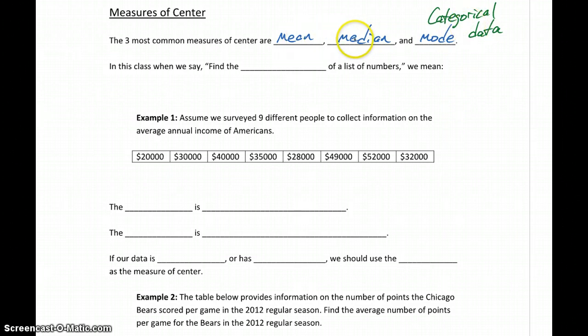So this gets us down to two common measures of center: mean and median. There are actually more than those — multiple different ways of finding the center of a data set. For instance, in the Olympics and other events where contestants are scored by judges, they'll typically throw out the lowest and highest value and then average what's left. In this class, though, we're primarily going to focus on the mean and median.